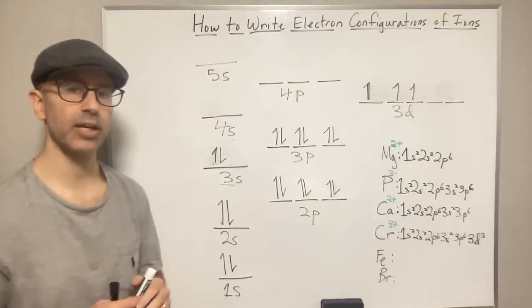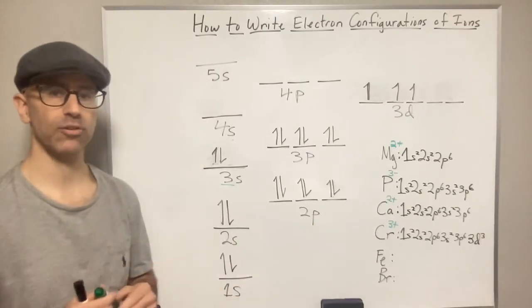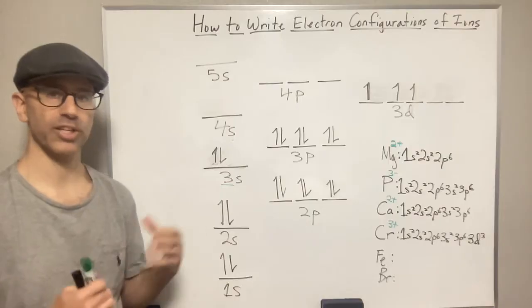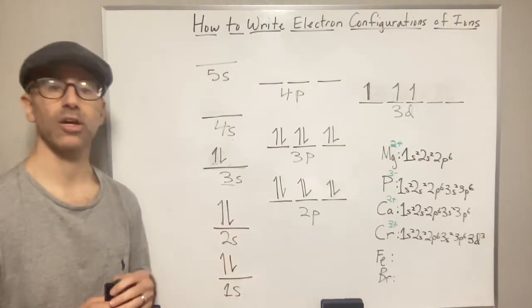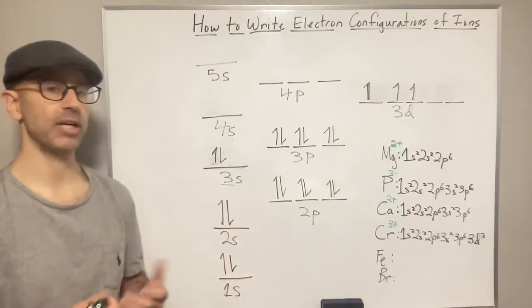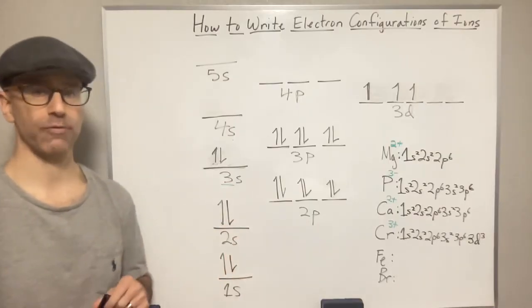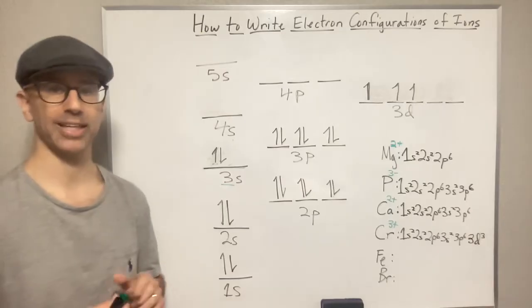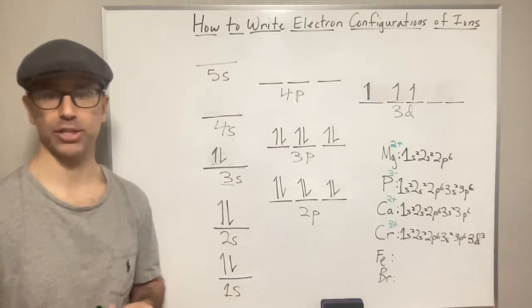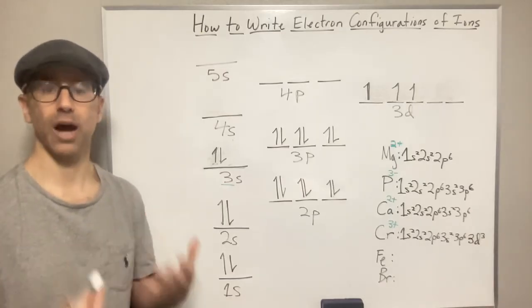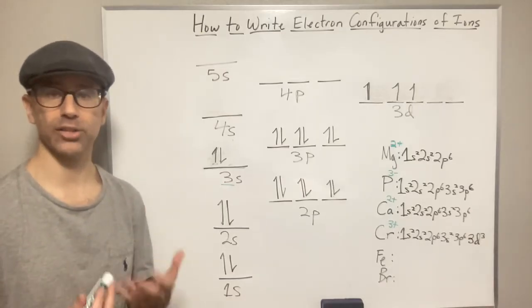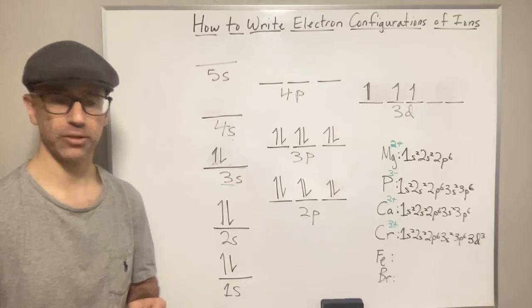This is typically what happens when we're dealing with transition elements. You've got to be careful when figuring out the electron configuration for ions that are transition elements.